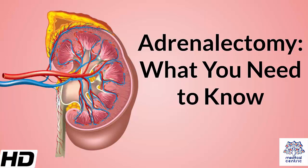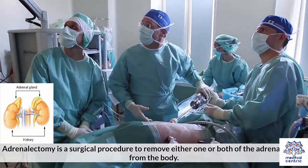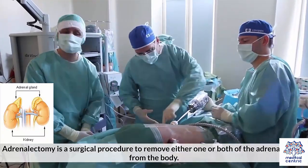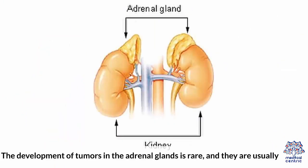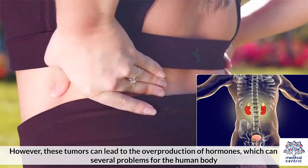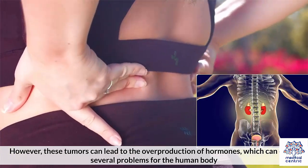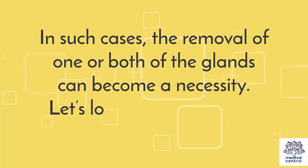Today's topic is Adrenalectomy – What You Need to Know. Adrenalectomy is a surgical procedure to remove either one or both of the adrenal glands from the body. The adrenal glands are located on top of the kidneys and are responsible for the release of several key hormones, such as adrenaline. The development of tumors in the adrenal glands is rare and they are usually benign. However, these tumors can lead to the overproduction of hormones, which can cause several problems for the human body, making the removal of one or both glands a necessity.